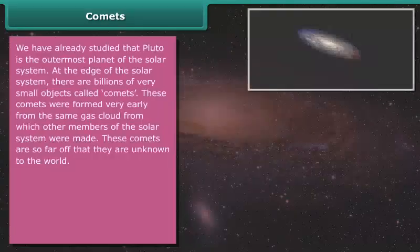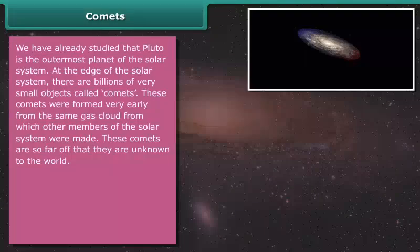We have already studied that Pluto is the outermost planet of the solar system. At the edge of the solar system, there are billions of very small objects called comets.